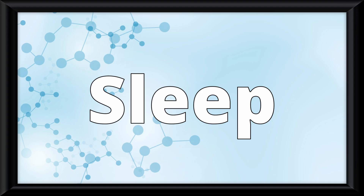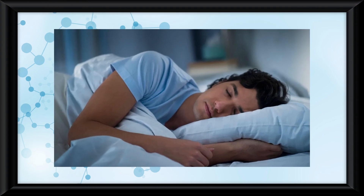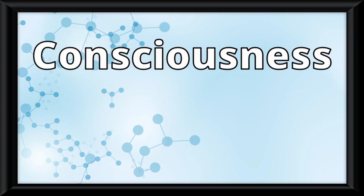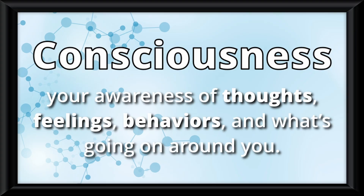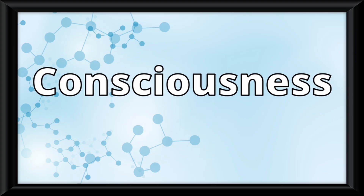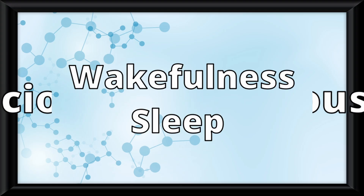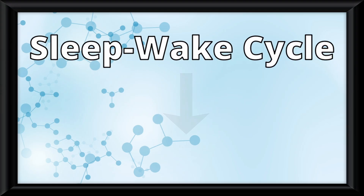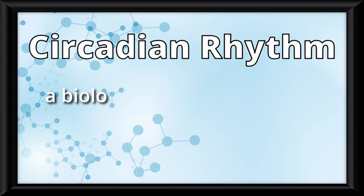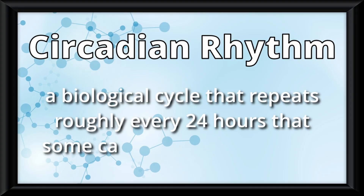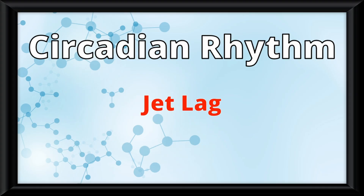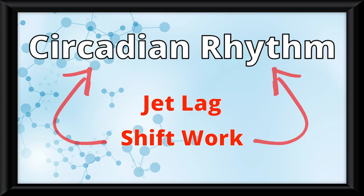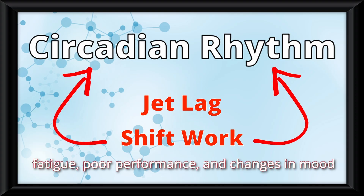Today we're covering sleep. First, we need to define consciousness — your awareness of thoughts, feelings, behaviors, and what's going on around you. There are two basic states of consciousness: wakefulness and sleep. The sleep-wake cycle is called a circadian rhythm, a biological cycle that repeats roughly every 24 hours, sometimes called a biological clock. Things like jet lag or shift work can throw off this rhythm, leading to fatigue, poor performance, and changes in mood.